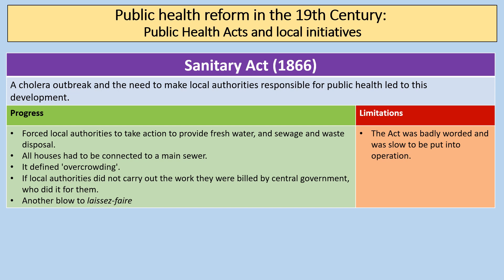The Sanitary Act of 1866: the last cholera outbreak was 1865–66, and the need to make local authorities responsible for public health led to this development. In terms of progress, it forced local authorities to provide fresh water, sewage and waste disposal systems; all houses had to be connected to a main sewer; it defined what overcrowding was; and if local authorities did not carry out the work, central government did it for them — another blow to laissez-faire. A limitation was that the act was badly worded and slow to put into operation.